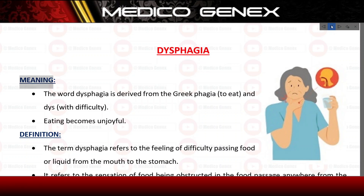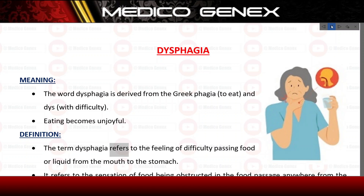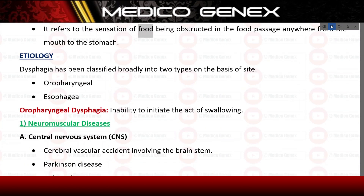Dysphagia — meaning and definition. The word dysphagia is derived from the Greek 'phagia', meaning to eat, and 'dys', meaning with difficulty. The term dysphagia refers to the feeling of difficulty passing food or liquid from the mouth to the stomach. It refers to the sensation of food being obstructed in the food passage anywhere from the mouth to the stomach.